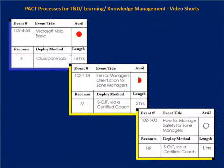On these training and development paths are various training and development events — formal training, unless it's content that could be but is not yet available. In this case, what's available is the Microsoft Visio Basics course, 16 hours, which is an elective under the recommendation area. The next course is partially available, and it's senior managers orientation for zone managers. It is mandatory. It is intended to be a structured on-the-job training via a certified coach and not just any coach. It'll be two hours when it's graded, and this suggests that some of the content exists, but it's not in the final form necessary.